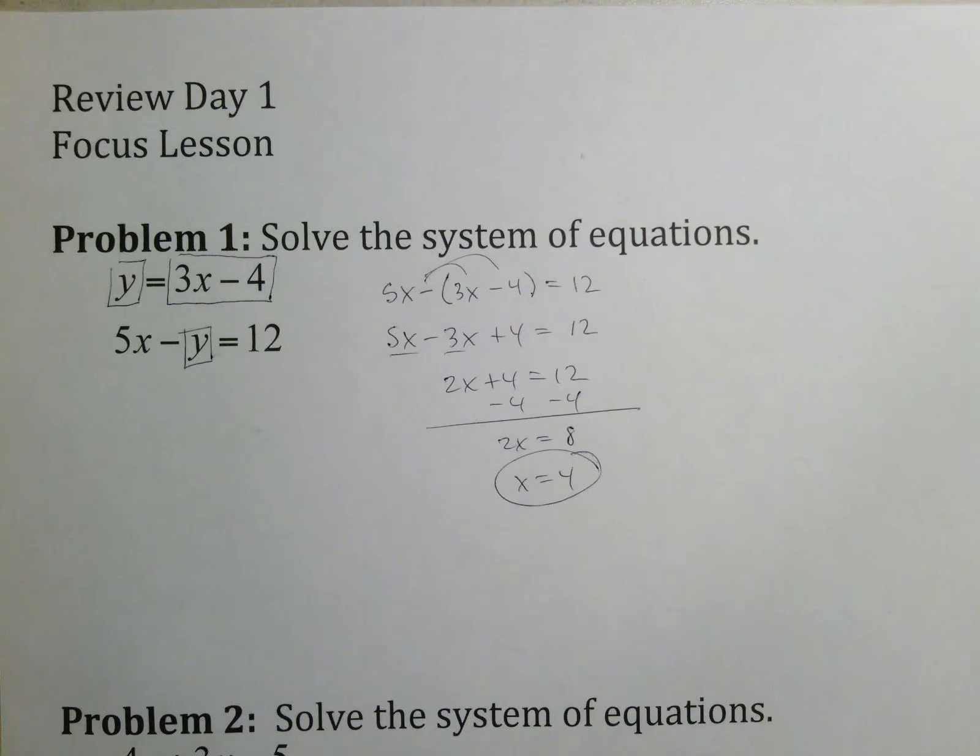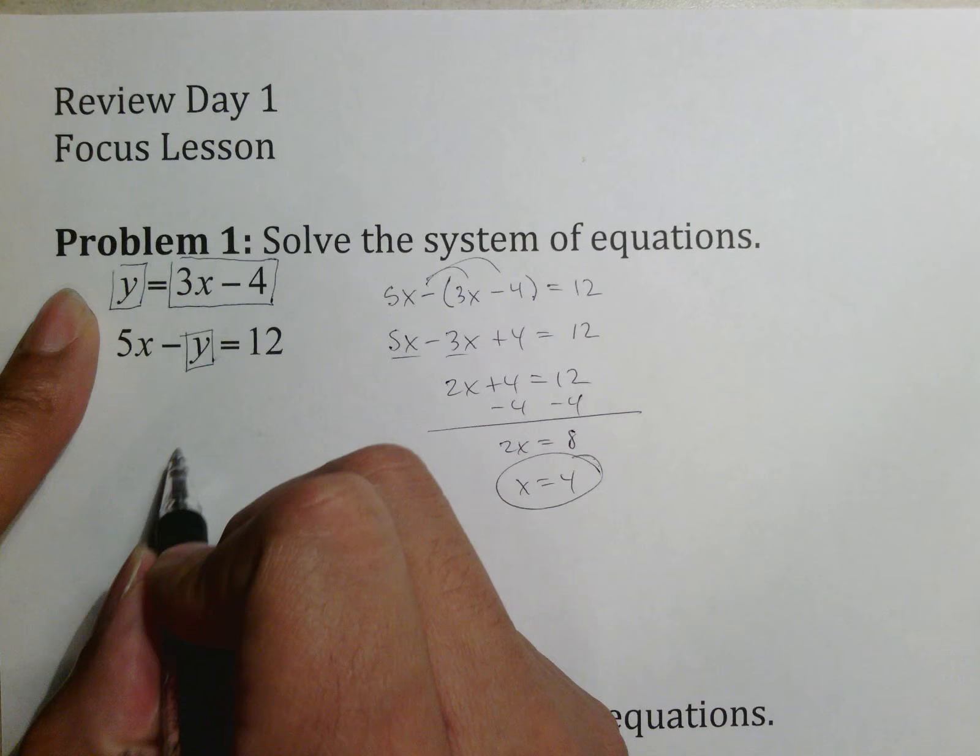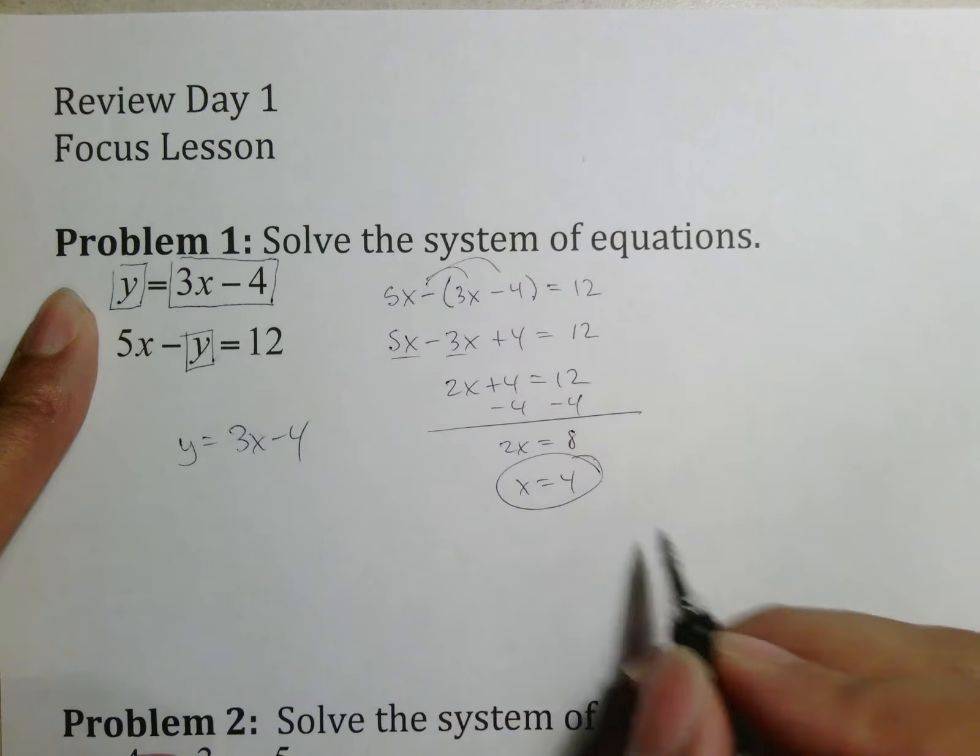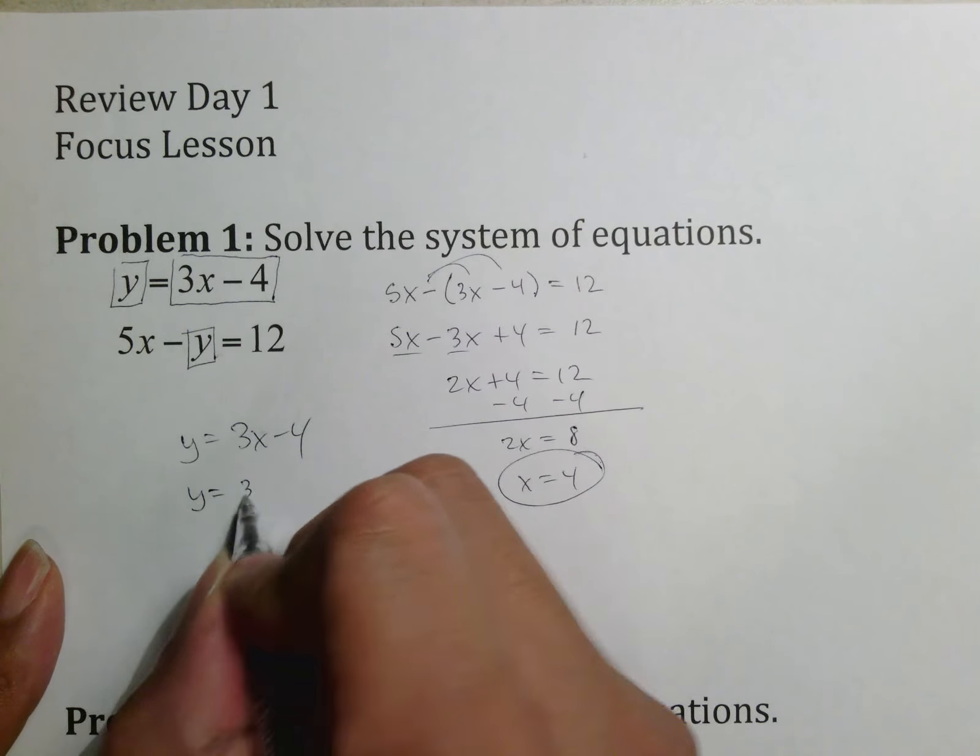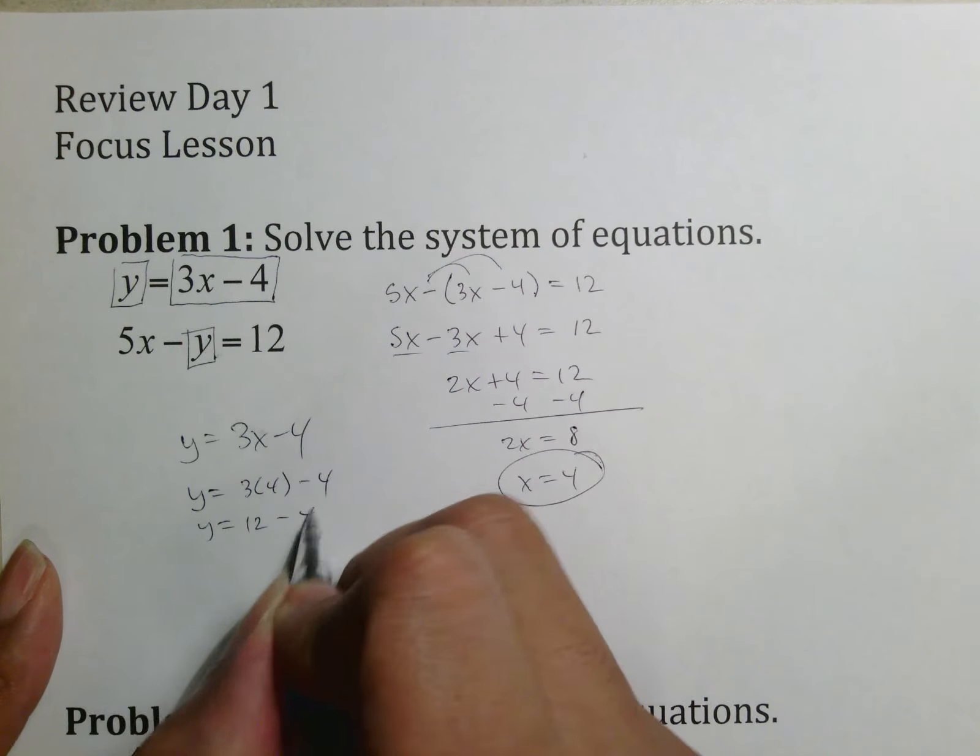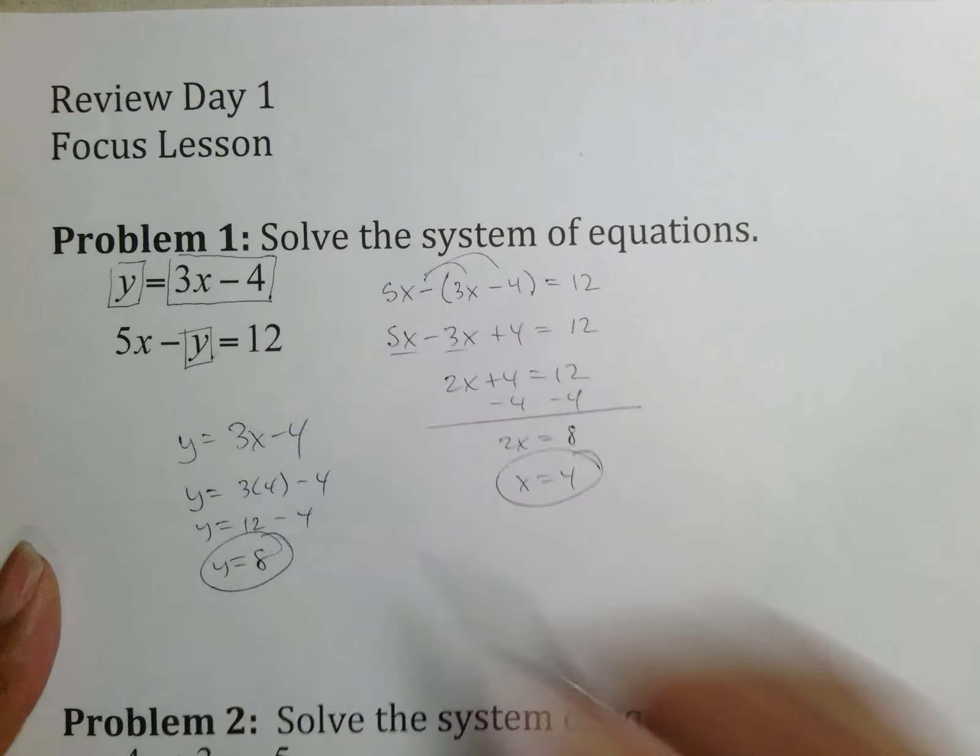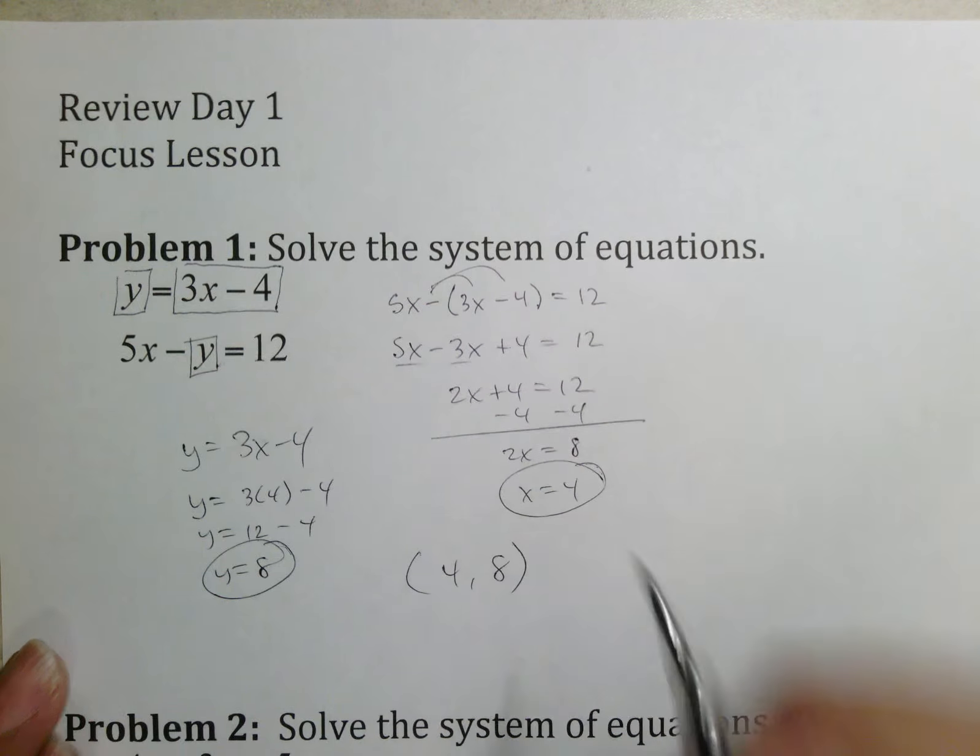Simplify by putting your like terms together: 2x plus 4 equals 12. Move your 4 and then divide by 2 to find out that x is equal to 4. Typically the easiest thing for me to substitute into is the one that has the variable by itself, so I'm going to rewrite my y equals 3x minus 4. I'm going to put 4 in for x.